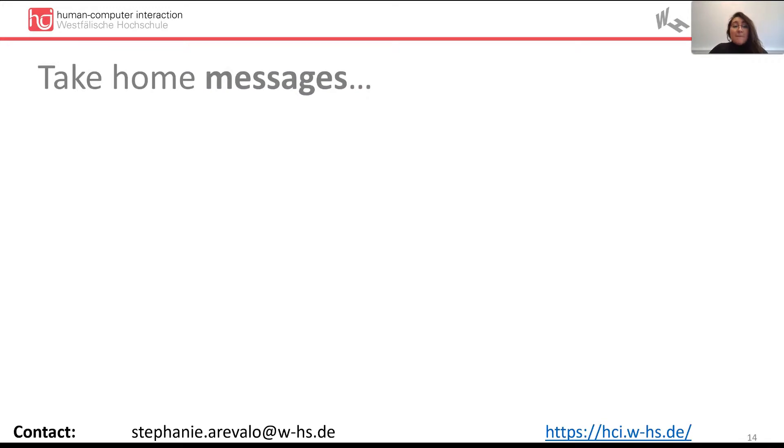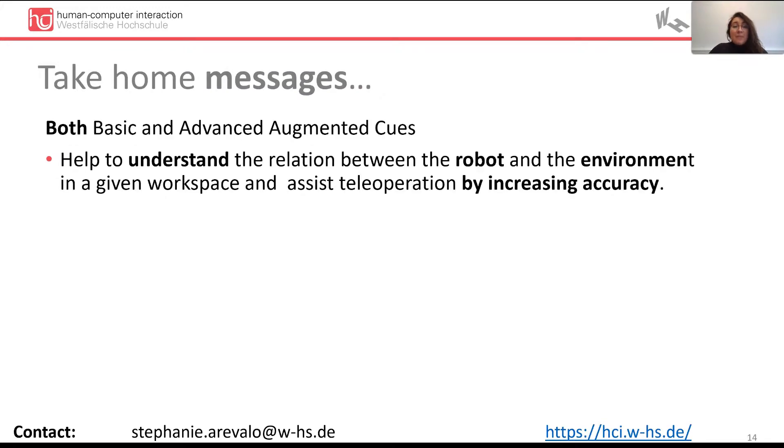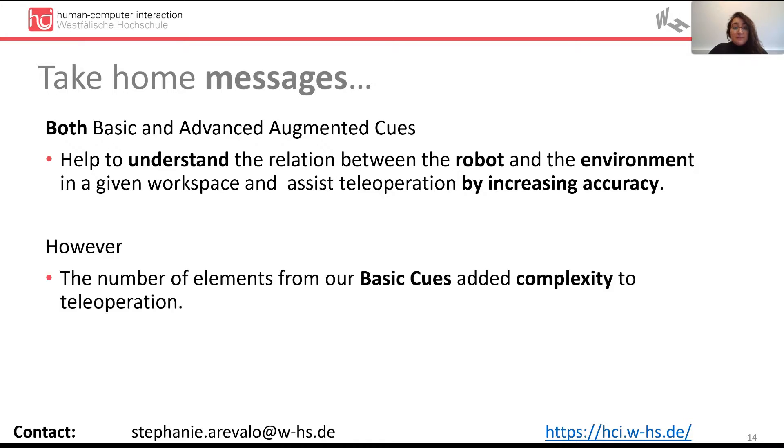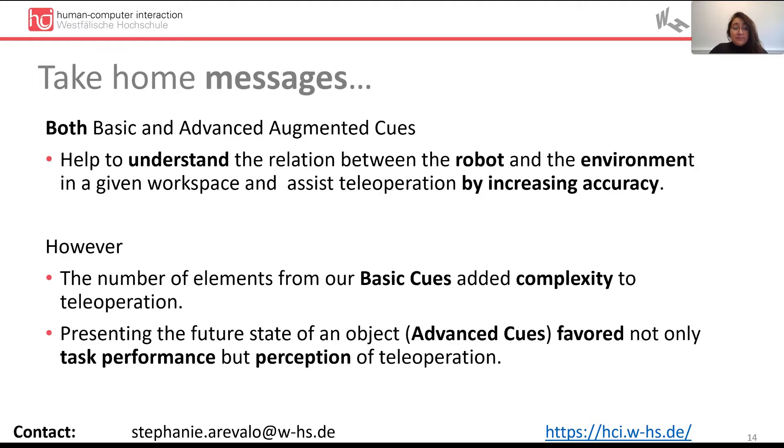Our take-home messages are that both basic and advanced cues help to understand the relation between the robot and the environment in a given workspace and assist teleoperation by increasing accuracy. However, the number of elements from our basic cues added complexity to teleoperation. On the other hand, presenting the future state of an object favored not only task performance, but perception of teleoperation.